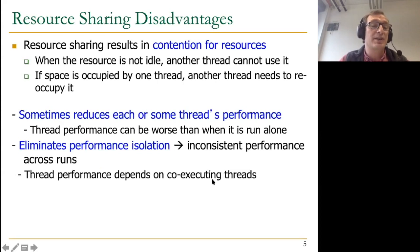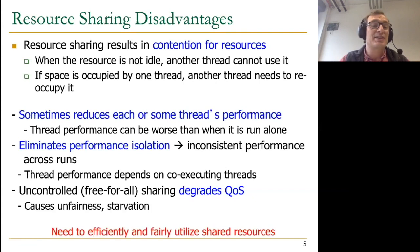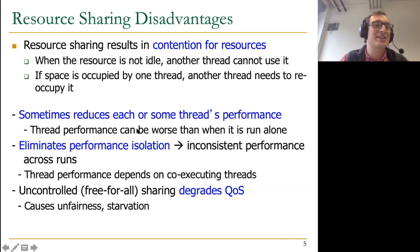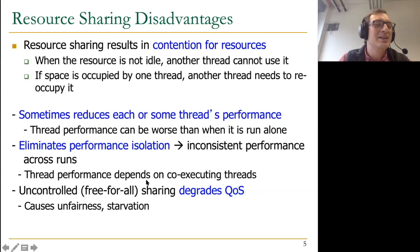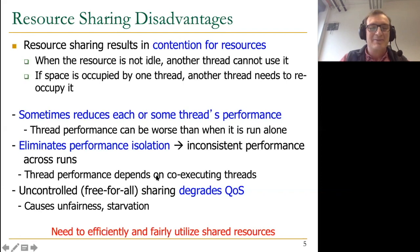Thread performance depends on co-executing threads. If sharing is uncontrolled — free for all with no control — this degrades QoS. Aggressive threads get the resources, causing unfairness and starvation. Similarly in human life, if you don't have fairness in how resources are managed, some bully may get all the resources because they're aggressive, and as a result, others may starve. The same applies to programs. There is a need to efficiently and fairly utilize shared resources when you have resource sharing.